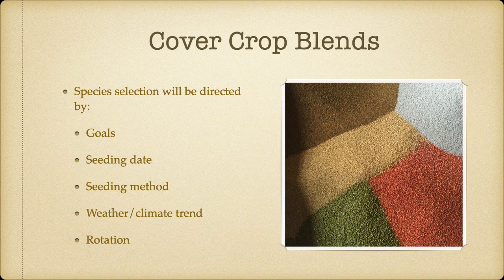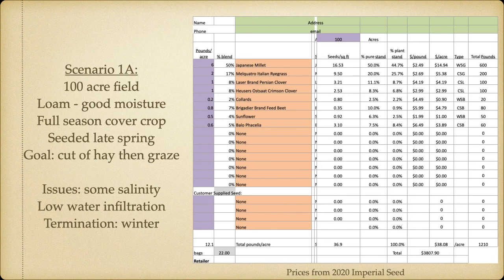When we look at these blends, species selection will be directed by what our goals are, what we're trying to do, seeding date, seeding method, the weather and climate trends, what the soil moisture is like and what it will be in the next few weeks, and by our rotation — what have we grown and what are we going to grow? We're going to go through some different scenarios and do some examples.